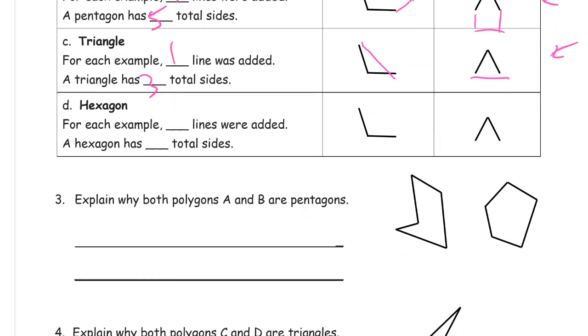There's hexagon, for example. There's two hexagons have to have six total sides. And each one of these has two. So I need to add four more lines to each one. 1, 2, 3, 4. This one's going to be kind of tricky. 1, 2, 3, 4.